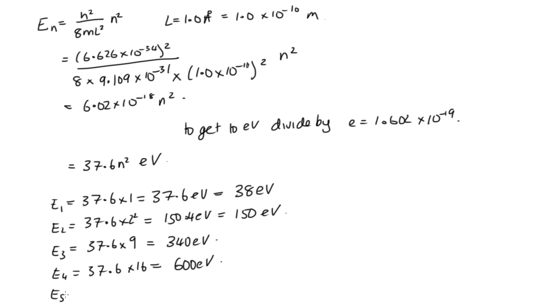E5, that's equal to 37.6 times 25, which gives us 940 electron volts. So we've worked out what each of these energies are now for the first five levels.